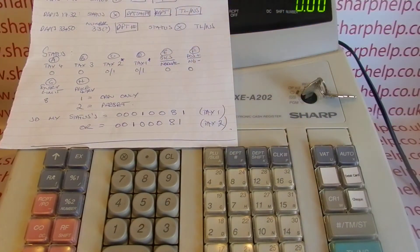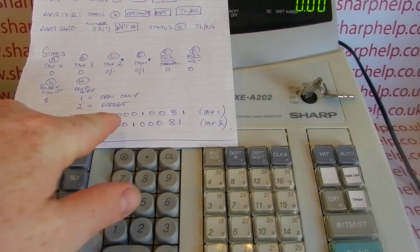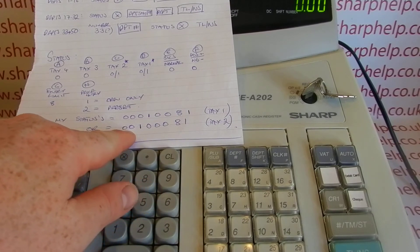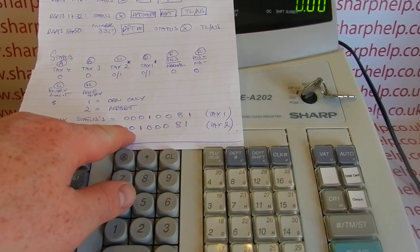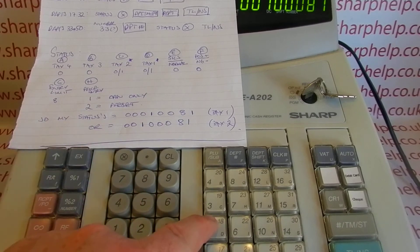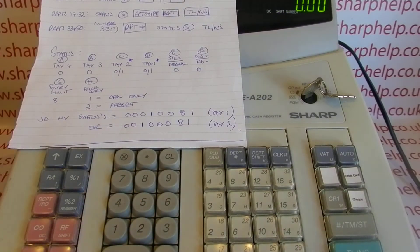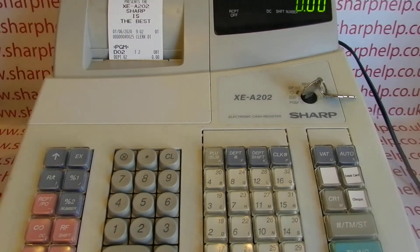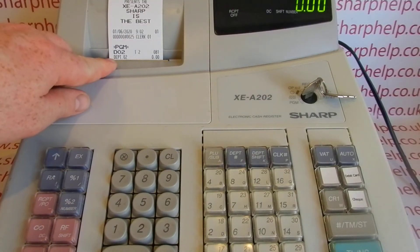We'll go back to PGM mode, and we'll now set department 2 to be the second tax rate. So I'm going to be entering this status for that department. So it's key round to PGM, status 0, 0, 1, 0, 0, 0, 8, 1. Then the multiply button, then my department button, and then TL/NS to save it. We get a little printout again. We'll just have a look at that so you can check that you're getting the same: department 2, tax 2.